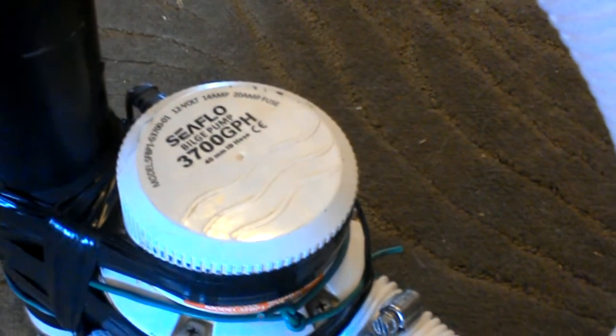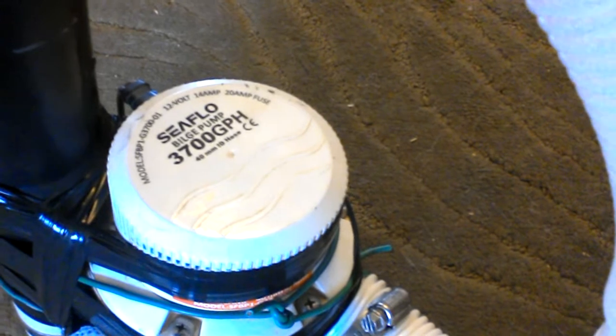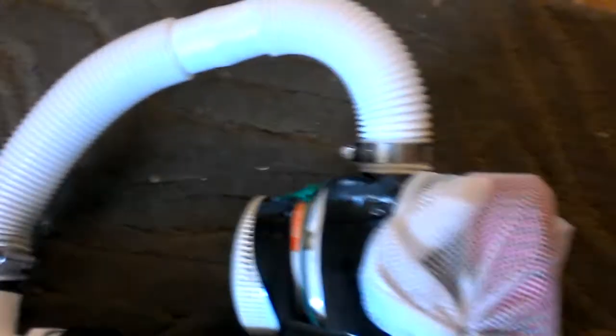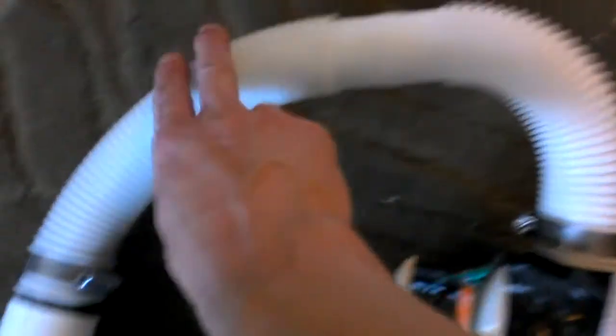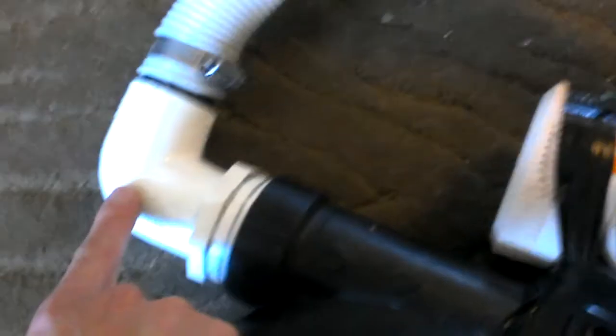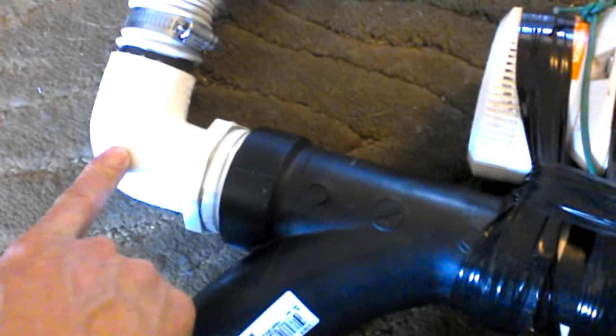You got your 3700 gallon per hour Sifo bilge pump, inch and a half bilge hose, and Schedule 40 90 degree bend.